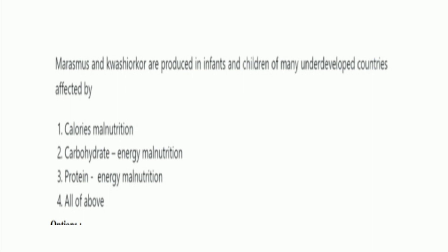Next question: marasmus and kwashiorkor are produced in infants and children of many underdeveloped countries affected by? The options are calorie malnutrition, carbohydrate energy malnutrition, protein energy malnutrition, and all of the above. The right answer is option 4, all of the above — because marasmus is caused by deficiency of calorie and energy, and kwashiorkor is caused by deficiency of protein.